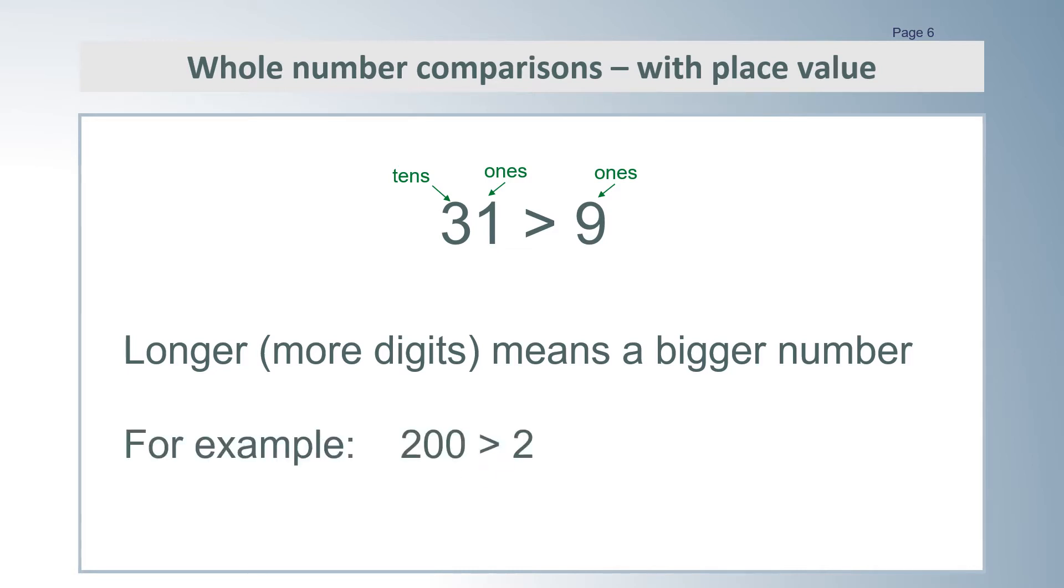For example, it is really easy to see that 200 is greater than 2, because 200 has 3 digits and 2 only has 1 digit. But we will see that it is not a good rule for rational numbers.